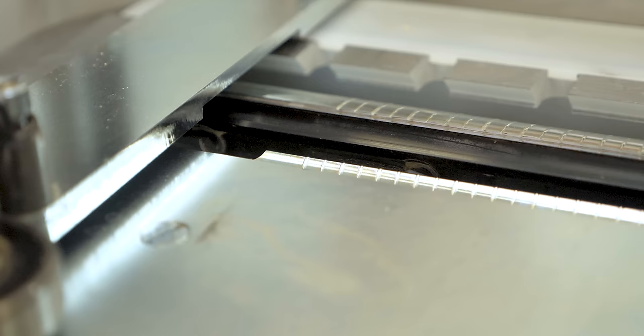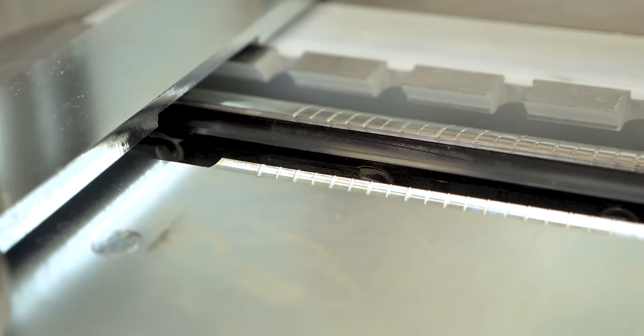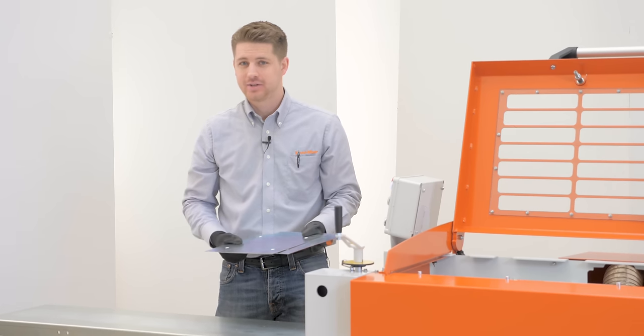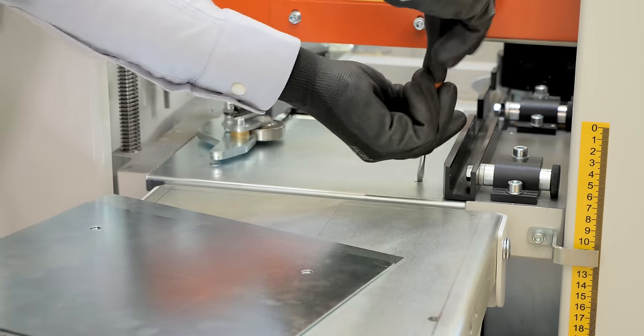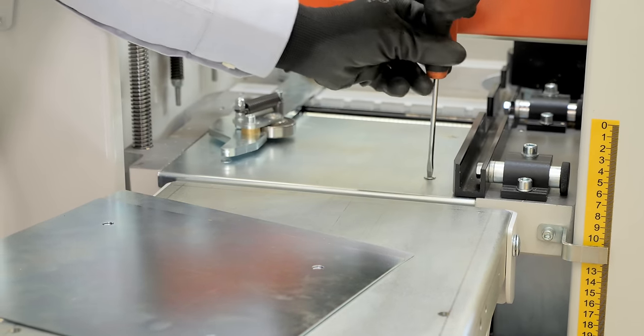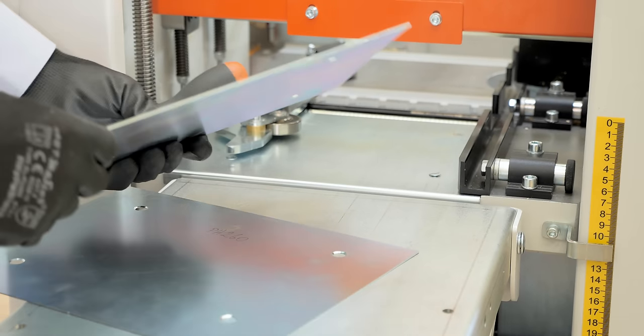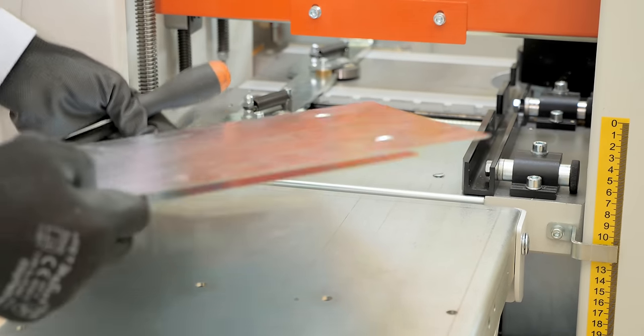As the board moves through the machine, the bottom cutter planes the bottom of the board smooth or cuts a molding profile. Depending on the cut depth you need, you can switch out this metal plate with one of several different sizes. Just remove the screws, and you can switch out a plate of a different size.